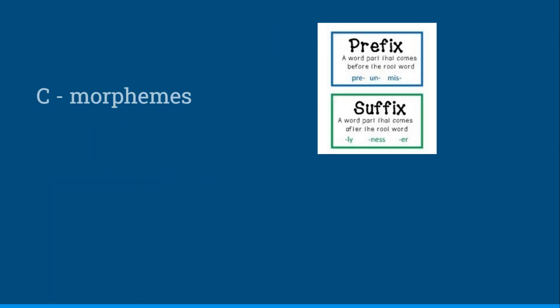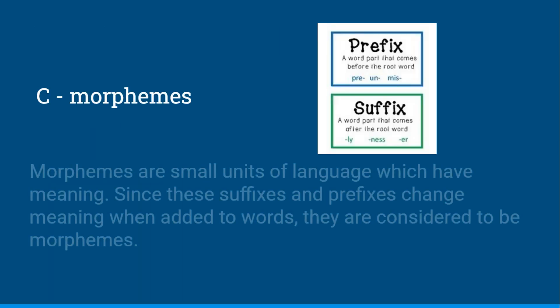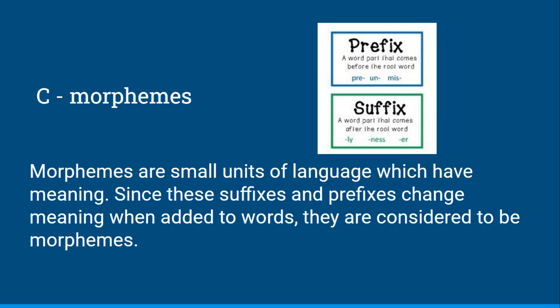These would be examples of morphemes. Morphemes are small units of language which have meaning. Since these suffixes and prefixes change meaning when added to words, they're considered to be morphemes.